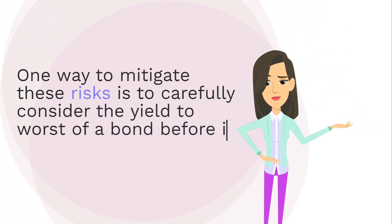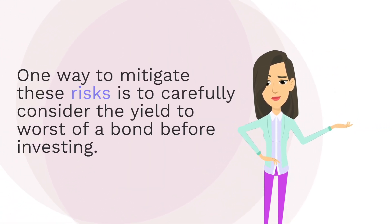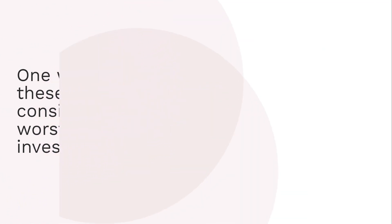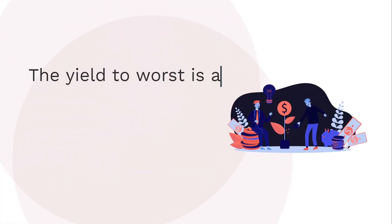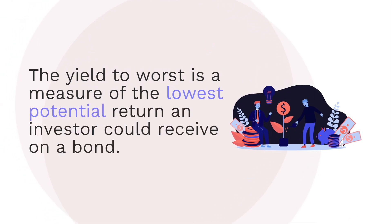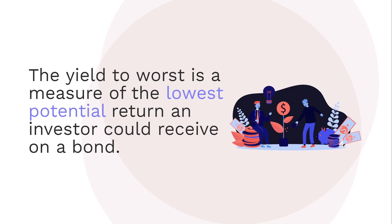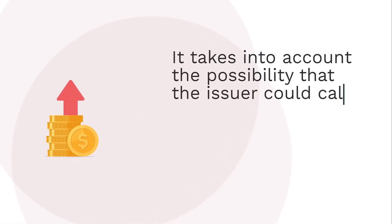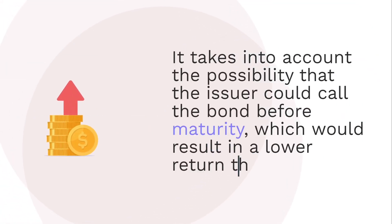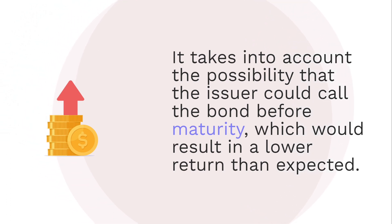One way to mitigate these risks is to carefully consider the yield to worst of a bond before investing. The yield to worst is a measure of the lowest potential return an investor could receive on a bond. It takes into account the possibility that the issuer could call the bond before maturity, which would result in a lower return than expected.